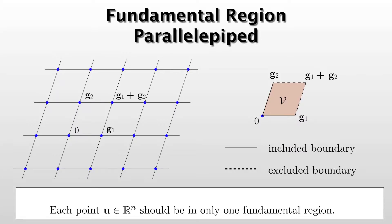Okay, so here is a lattice with generator vectors. We have the origin 0, g1, g2, and g1 plus g2 here.